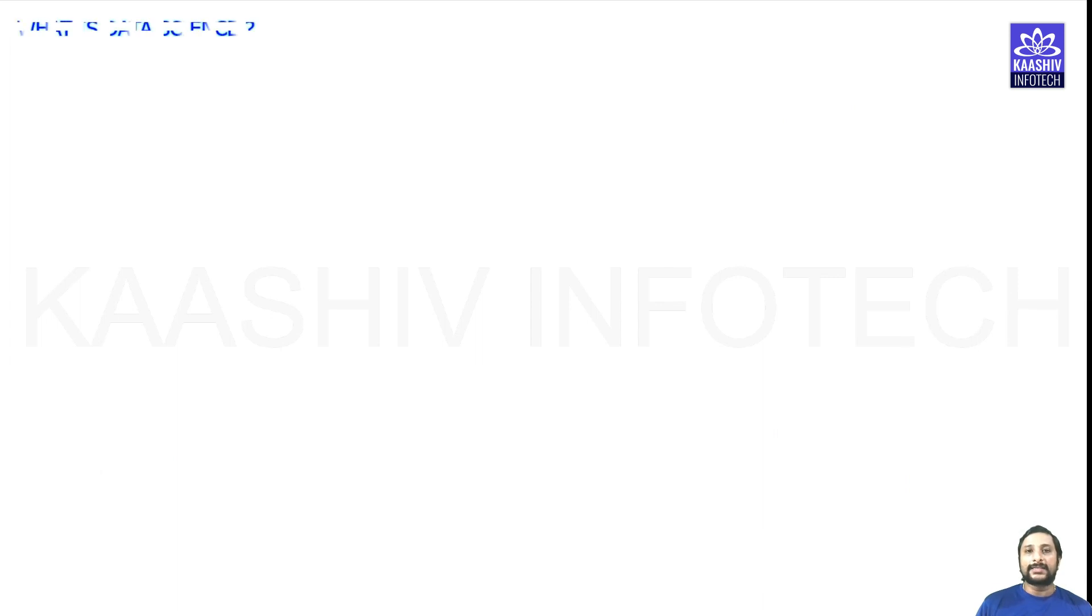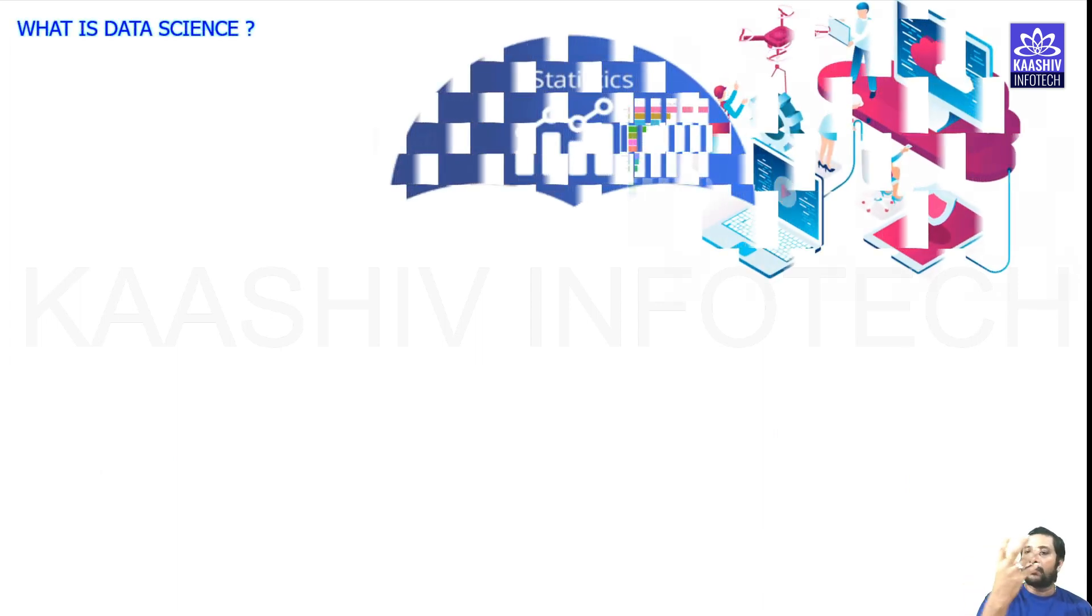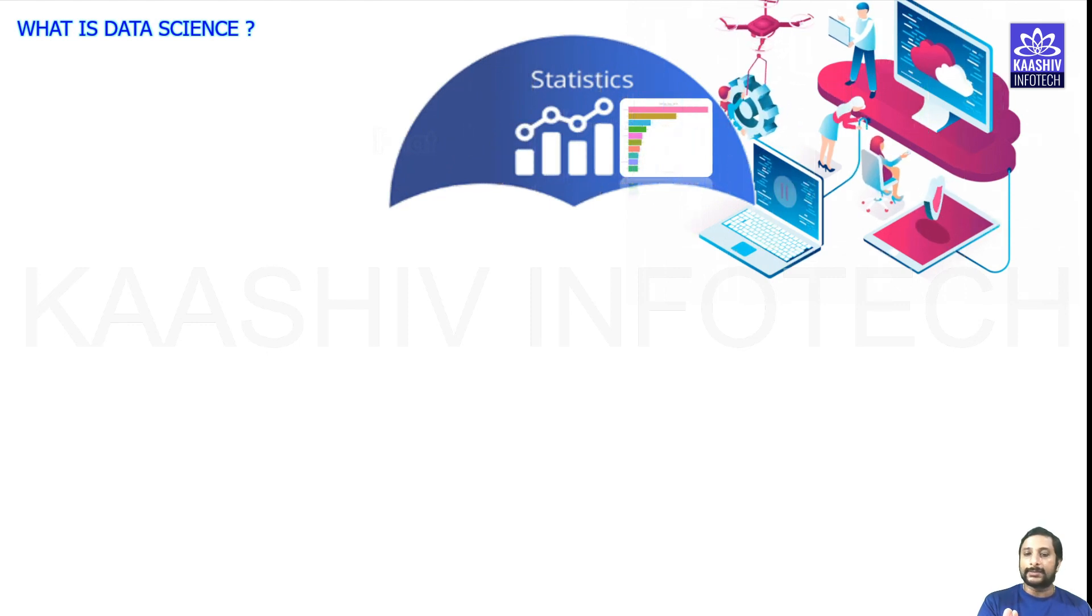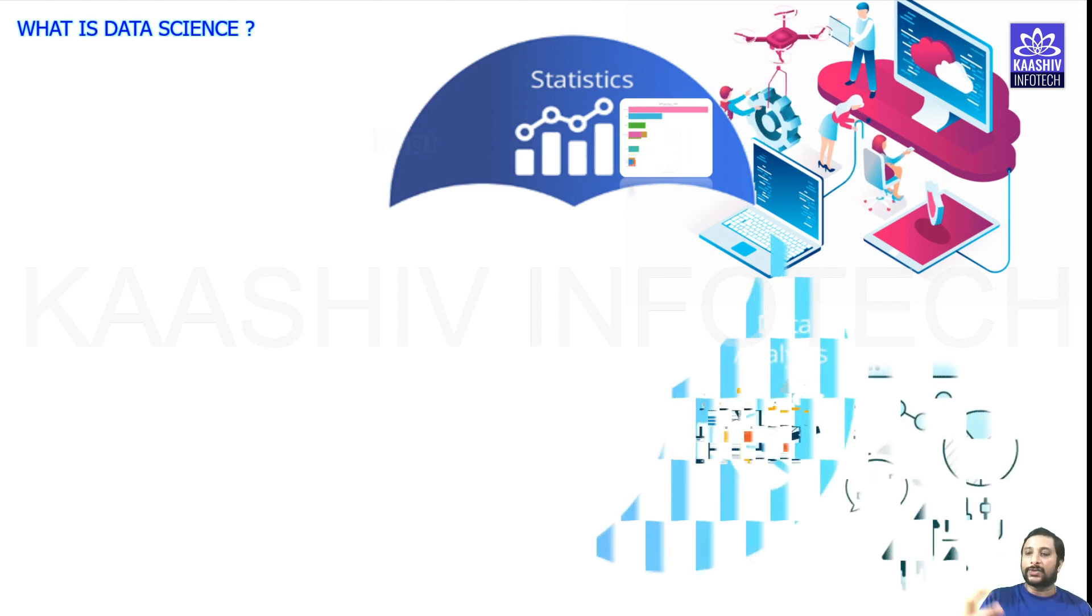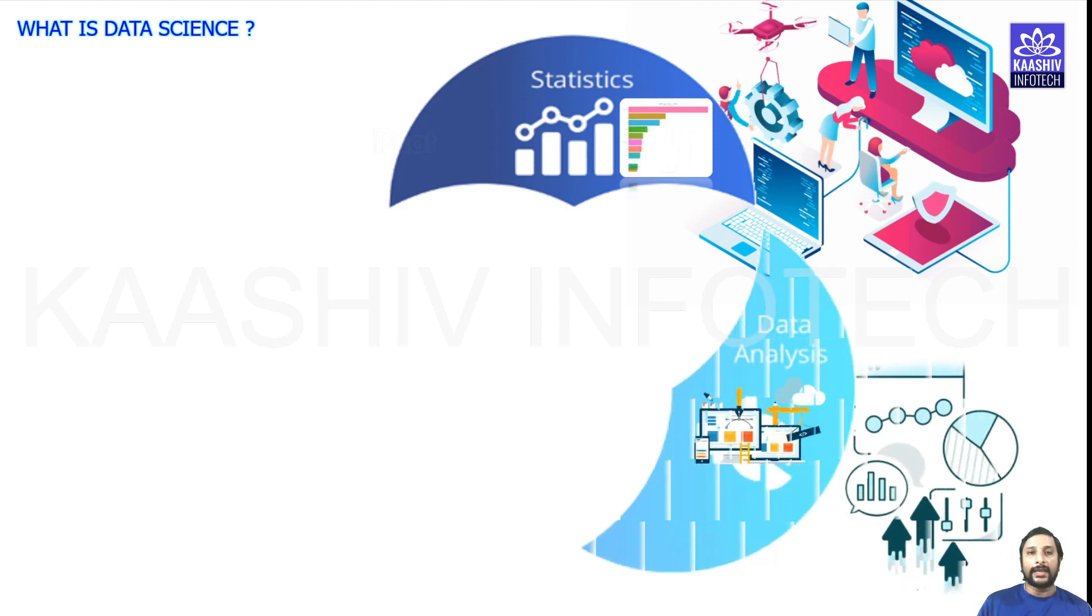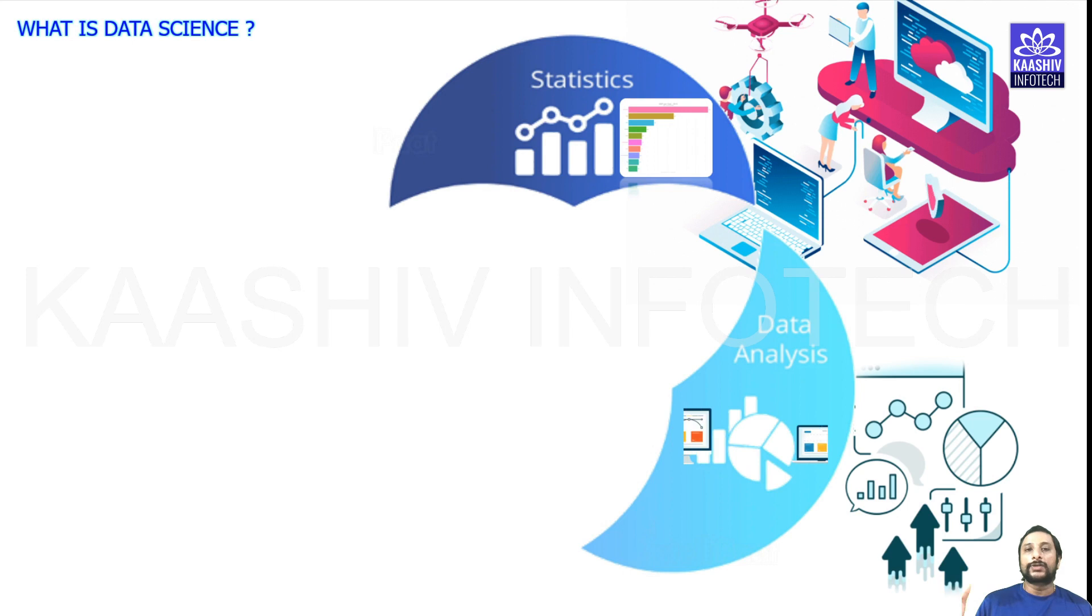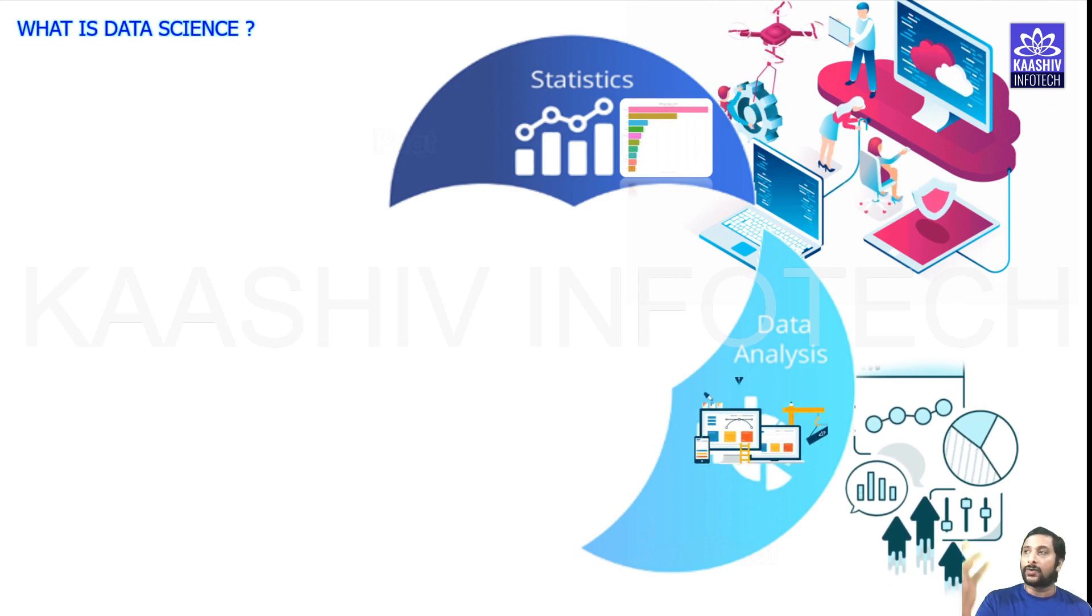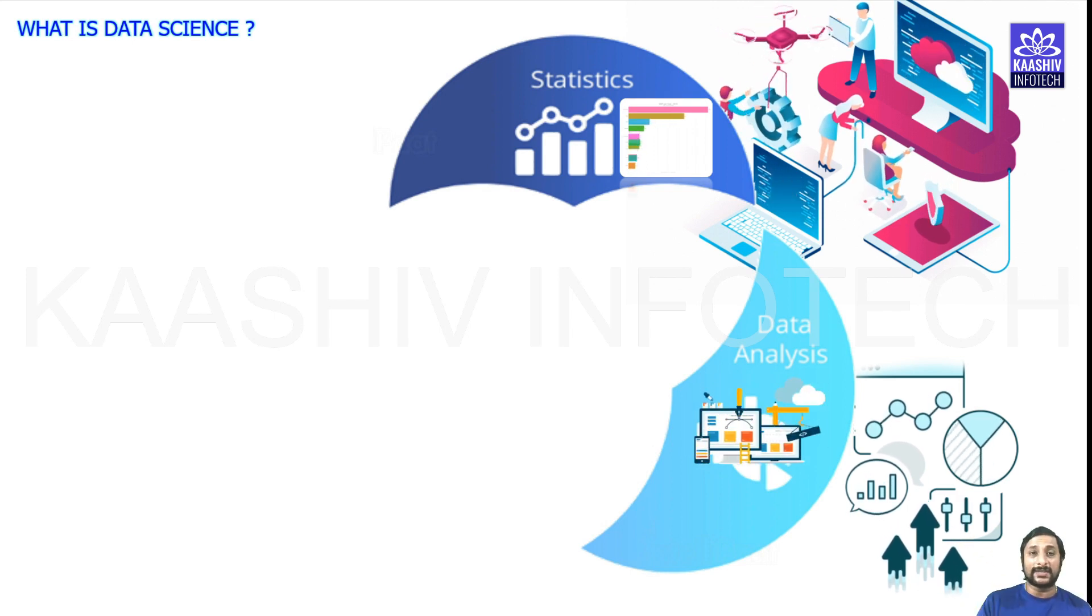We talk about data science. First thing is we need the statistical data and artificial intelligence. Data with experience is machine learning. Machine learning plus statistics or mathematics will be a kind of data science.